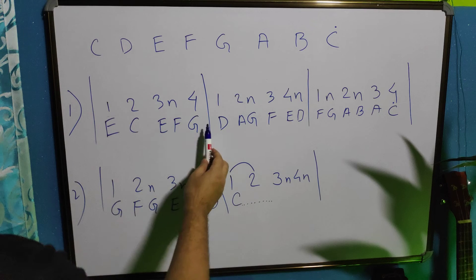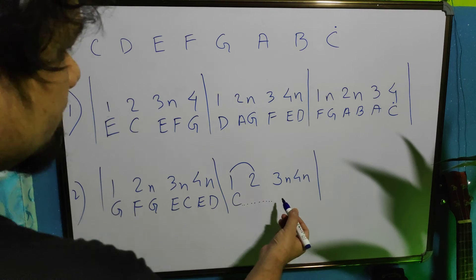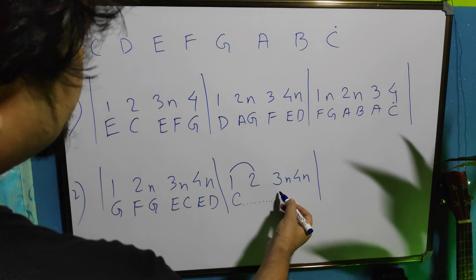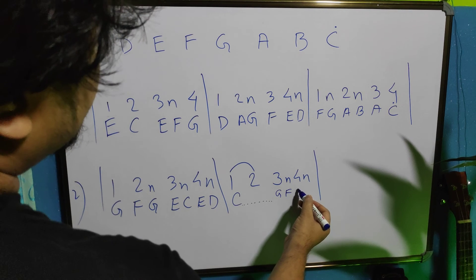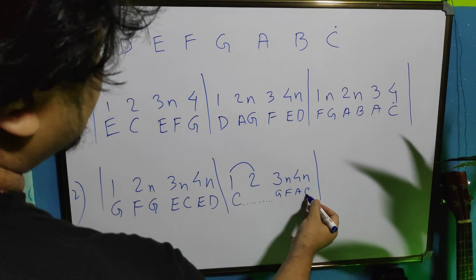These are crotchet, crotchet, quaver, crotchet. Now, here we can again arrange some different note. So, G, F and let's just say a C.